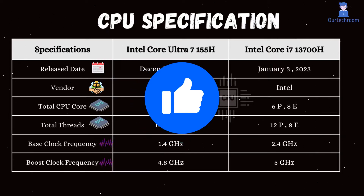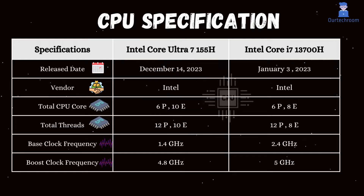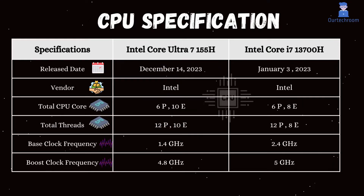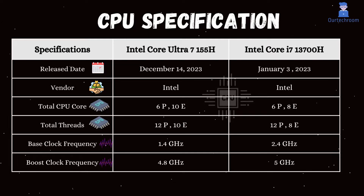The Core Ultra 7 155H was released on December 14, 2023, approximately 11 months after the release of the Intel Core i7-13700H.